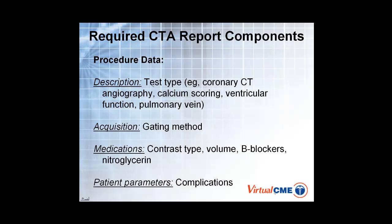In terms of the procedure data, there are different test types. You're going to do coronary CT angiography with or without calcium scoring. If you're doing retrospective gating, you may have included left ventricular function. If you're doing the study for an electrophysiologist who's interested in ablation, you may be doing it for pulmonary vein anatomy.